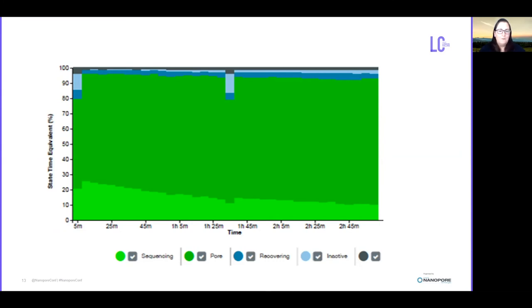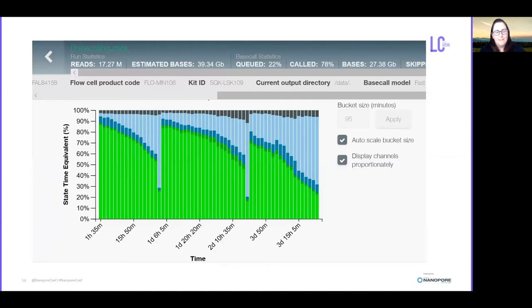With a lot of optimization we're getting much better pore occupancy, and this is a fairly recent run that we did on a minion flow cell where you can see that we're using almost all of the available pores and we're reloading the flow cell several times throughout the run. This particular flow cell gave us 40 gigabases of data output, so we're quite happy with the reads that we're getting now.